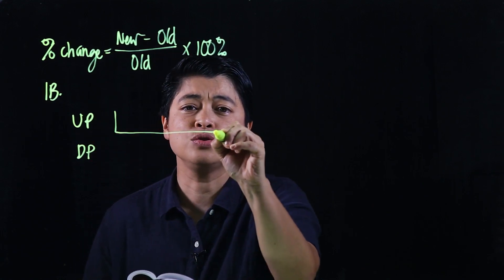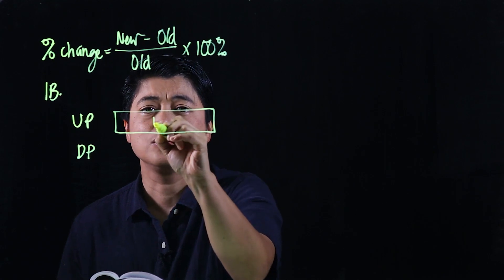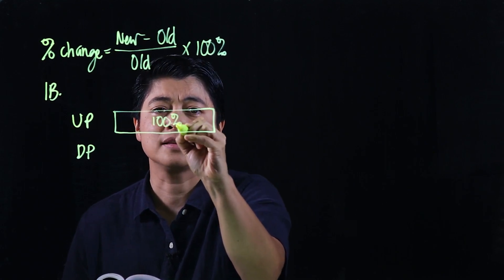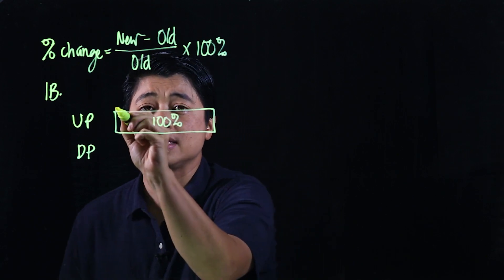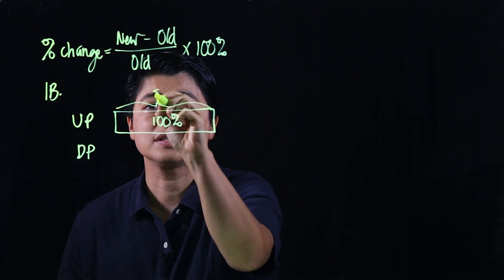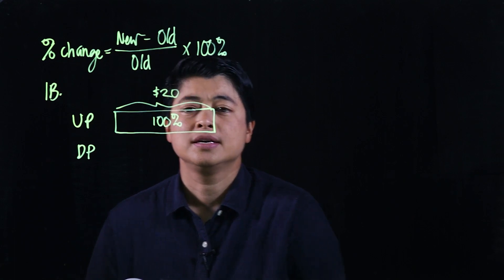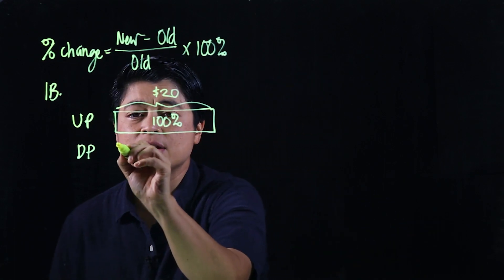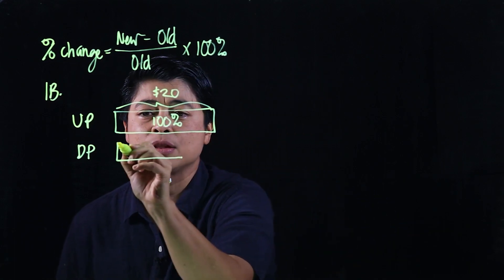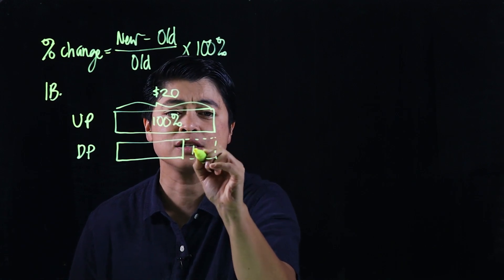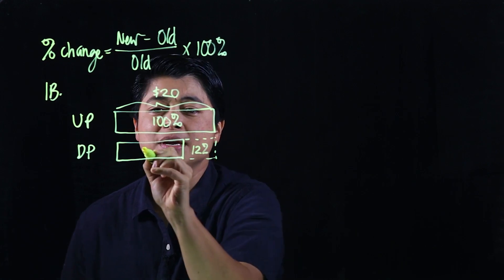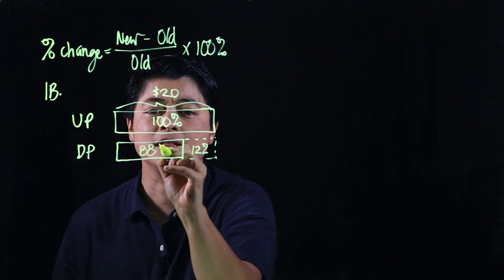So this, the usual price is 100 percent. Okay, and then it says that this is $20 because that's the usual price. Okay, and then the discounted price is discounted by 12 percent. So if it's discounted by 12 percent, that's 12 percent, which means this must be 88 percent.